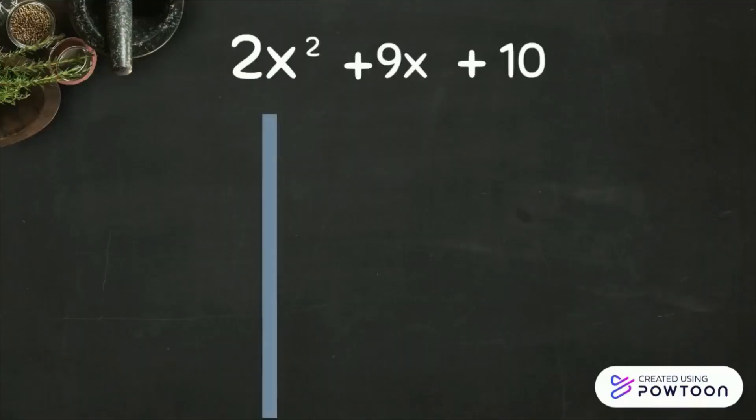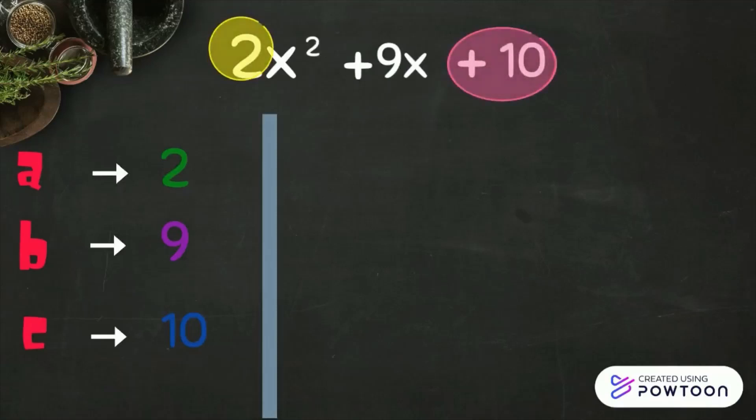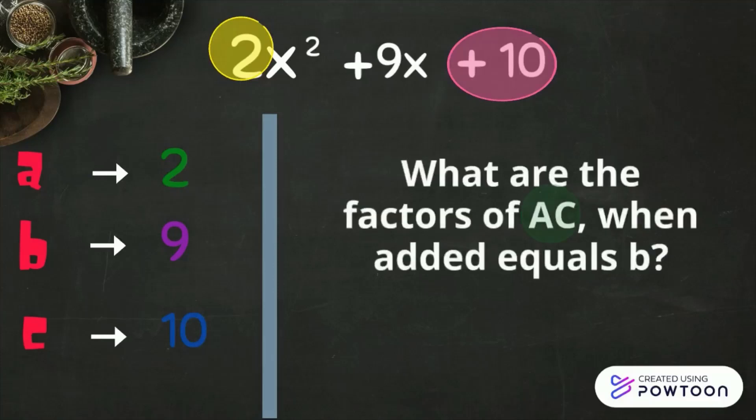This time, we're going to find the product of a and c, which are 2 and 10. 2 times 10 is 20. And then after, we're going to find the factors of 20 that when added equals b, which is positive 9.